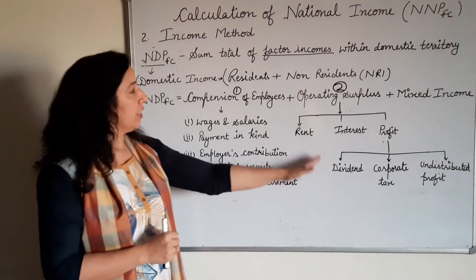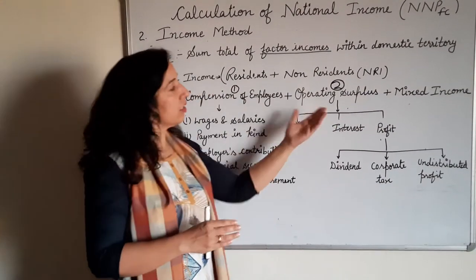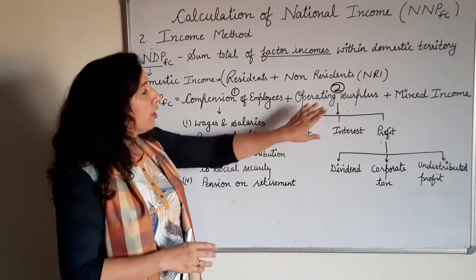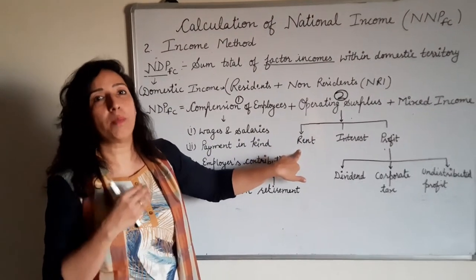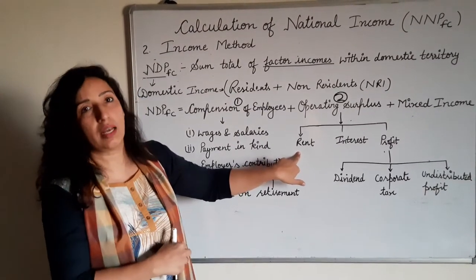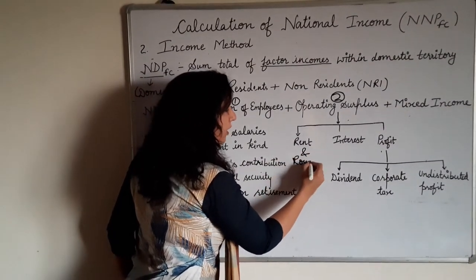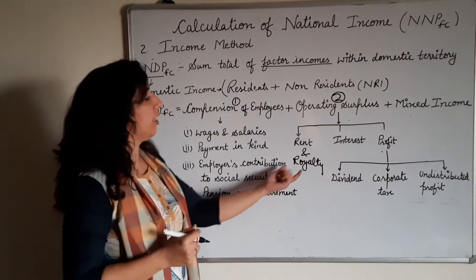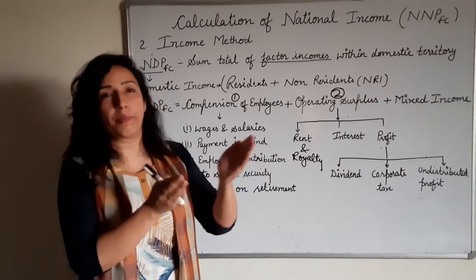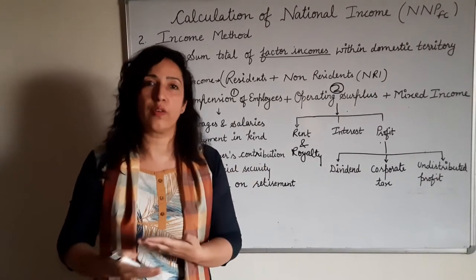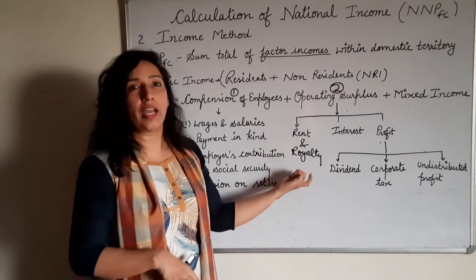The second part to calculate NDP at FC is operating surplus. This income is earned from property and entrepreneurship. For example, if a person gives their land on rent, the rent income they earn is called factor income. Royalty is also added here — for instance, book writers take royalty every year as new editions of their books are released. So rent and royalty, if given, are to be included.